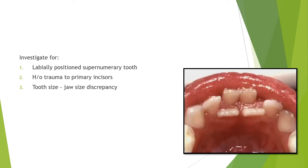When you find a case of anterior crossbite, you need to investigate for the cause. First, look for a labially positioned supernumerary tooth — these can block the eruption pathway of the permanent tooth, causing it to erupt in crossbite. Second, check for a history of trauma to the primary incisors where intrusion has deflected the eruption pathway of the permanent tooth, also causing anterior crossbite.